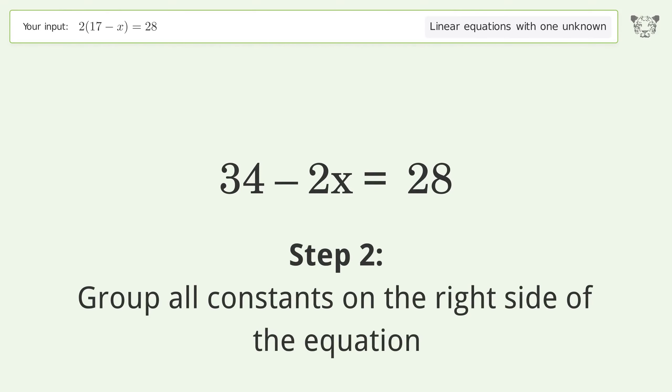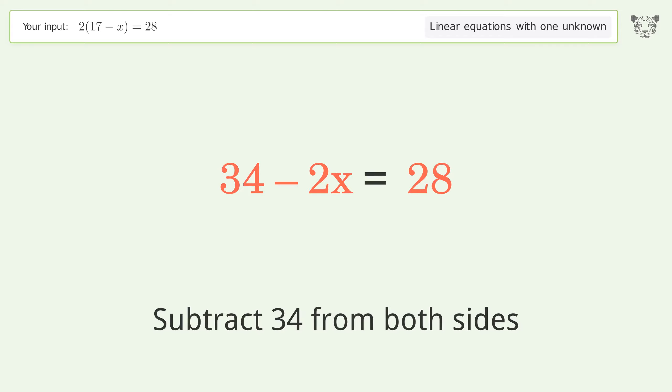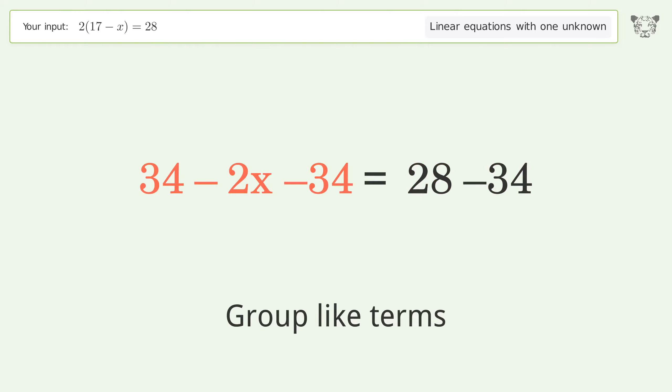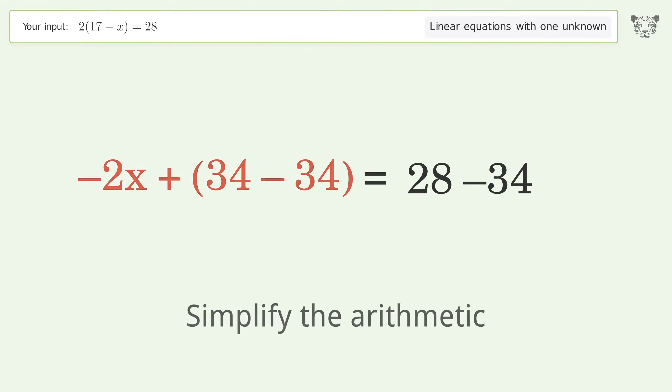Group all constants on the right side of the equation. Subtract 34 from both sides. Group like terms, simplify the arithmetic.